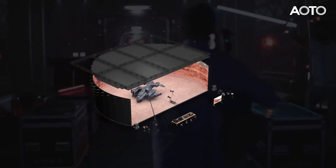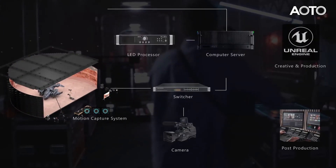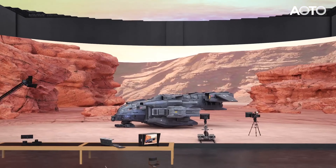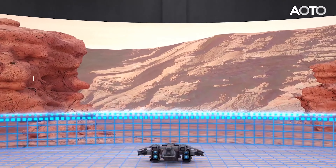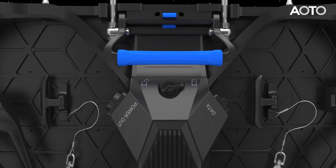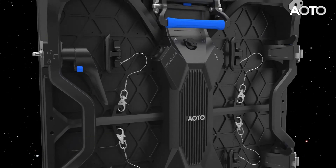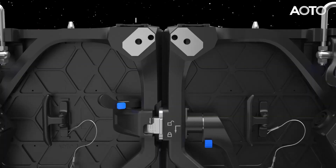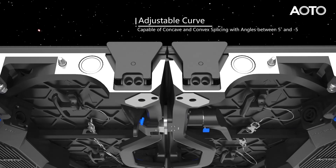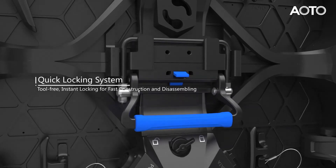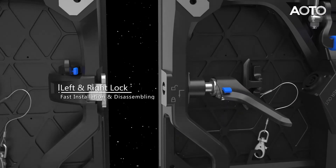Please take a look at the first video. The LED wall, ceiling, and floor combined become a complete virtual production. The backdrop is the LED screen — our RM series.